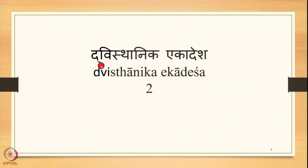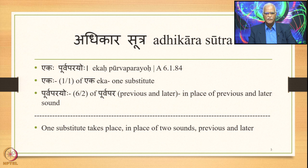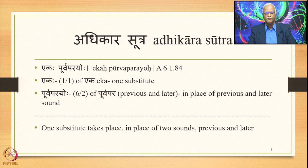Now this is the second classification: Dvishthanika Ekadesha, which we are currently studying. This means two substituents and one substitute. In this Dvishthanika Ekadesha, the main part is played by the sutra which is an Adhikara Sutra, Ekah Purva Parayoho 6.1.84, where Ekaha means one substitute and Purva Parayoho means in place of the previous and latter sound.